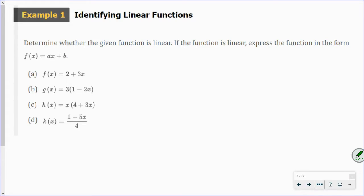Determine whether the given function is linear. If the function is linear, express the function in the form f of x equals ax plus b. So that's just y equals mx plus b. Okay, here this one is a function, but we need to rearrange it. f of x equals 3x plus 2. So you have a slope of 3 over 1 and a y-intercept of 2. Here, let's go ahead and distribute this. So we have g of x equals minus 6x plus 3. I went ahead and rearranged it. Now we have a negative slope of negative 6 over 1 and a y-intercept of 3.